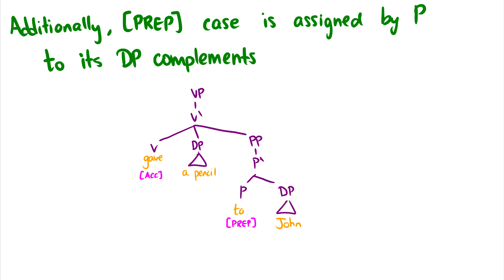There's also prep case. And this is assigned to its DP complements by P. So for instance, some verbs are ditransitive. And we haven't looked at ditransitive structure yet. But essentially, we could say gave a pencil to John. So we said all DPs need case. So John has to get some case. And John gets this prepositional case from P. That just checks it. And this would appear like it has accusative case. So John gave a pencil to me. But it just appears as prep case, prepositional case.